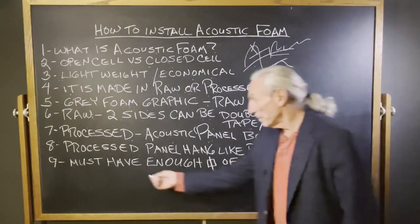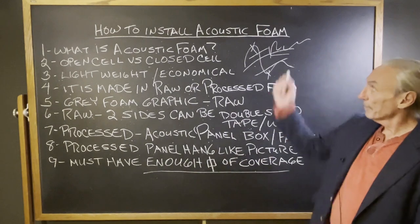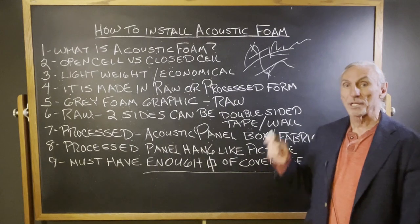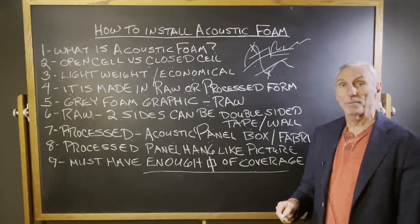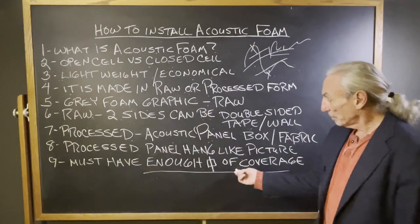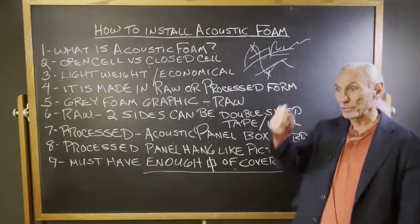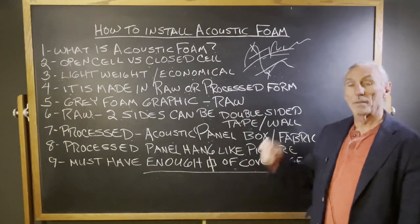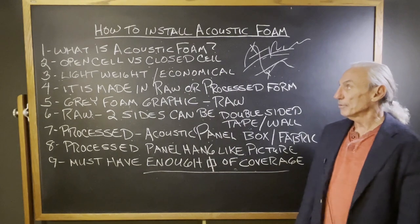Here's the key that most people don't understand: you have to have enough surface area coverage with acoustic foam — or any absorption or diffusion technology — to solve the problems of the room. You have to analyze the problems in the room, look at the frequency and amplitude of the problem, and then prescribe enough square footage of the correct rate and level of absorption. It's a step-by-step process to achieving your goals.